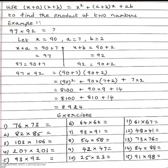Here we can write 97 as 90+7 and 92 as 90+2, which gives us x+a and x+b form. Using the formula, let x=90, a=7, b=2.